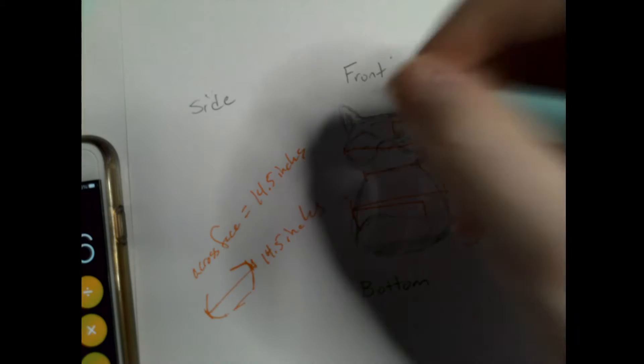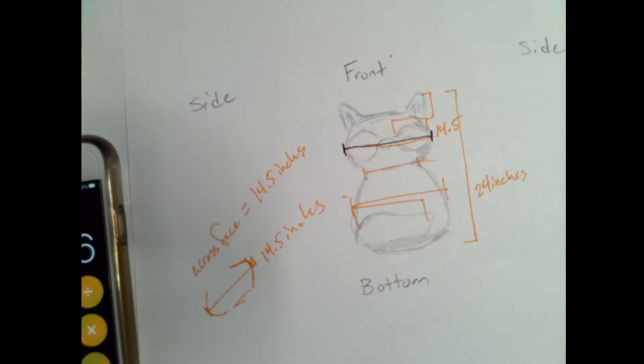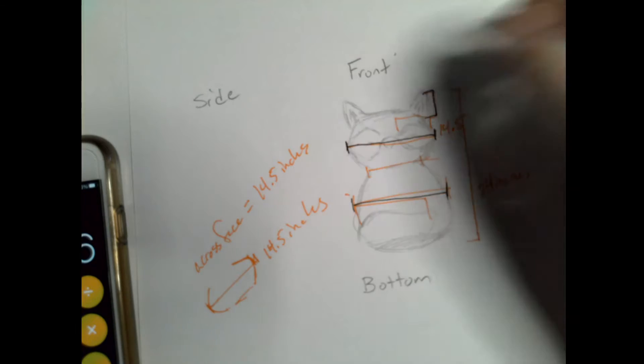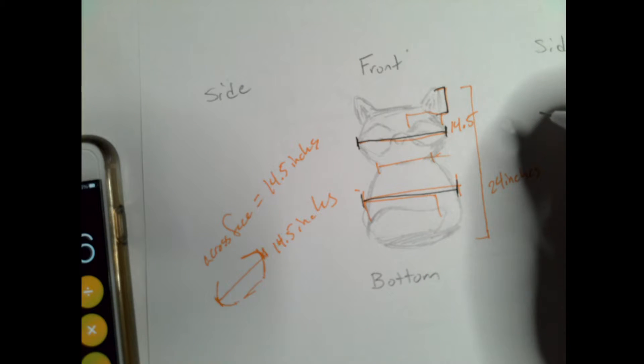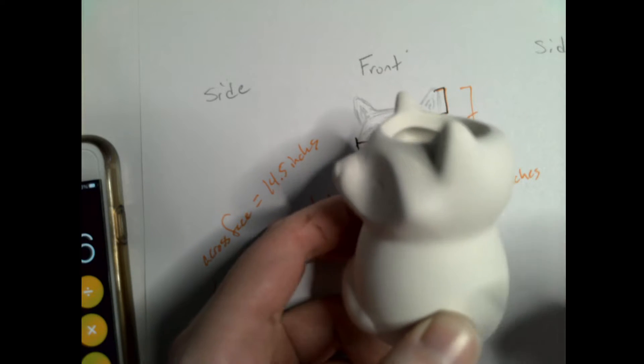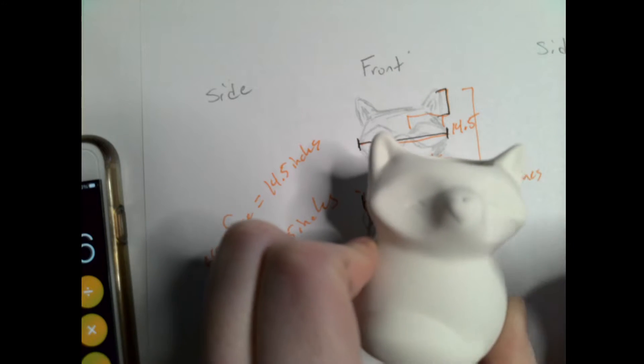But I need to find things like the width across the face, the width across the body, the height of the ear, anything that I'm going to need to sculpt. Same thing like how long is that? How tall is it from here to there? And I take those measurements.